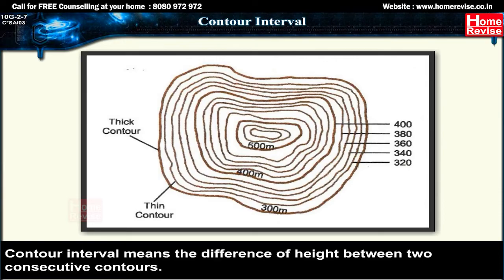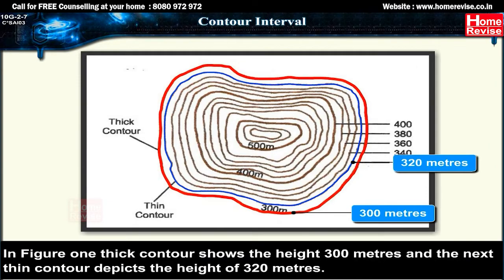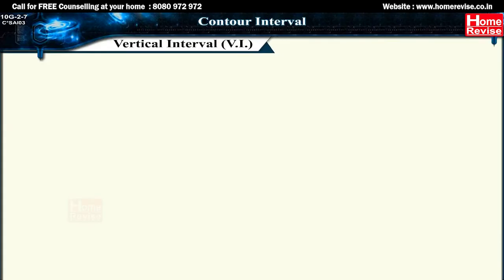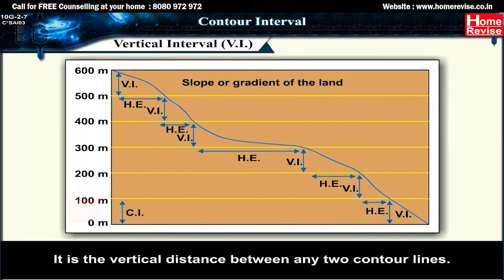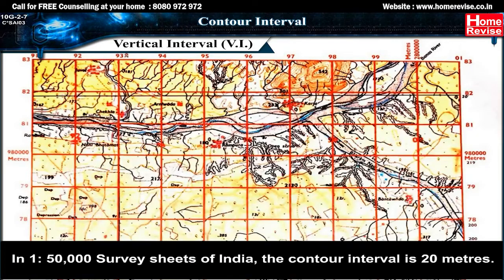Contour interval means the difference in height between two consecutive contours. For example, if one thick contour shows a height of 300 meters and the next thin contour depicts 320 meters, the contour interval is 20 meters. Vertical interval (VI) is the vertical distance between any two contour lines. In most British Ordnance maps the vertical interval is either 50 or 100 feet; in 1:50,000 Survey of India sheets the contour interval is 20 meters.